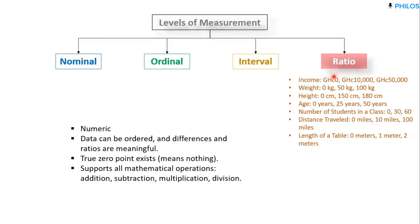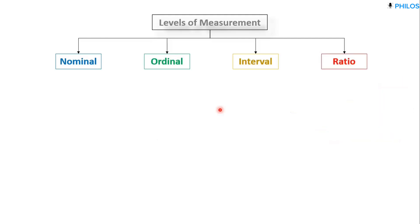For ratio level data you can calculate the mean, and aside from the mean you can also find the median, the mode, percentiles, quartiles, standard deviation, range, coefficient of variation, and more. In our next tutorial we'll look at data collection methods. Please comment below with examples of each level of measurement, and be sure to like the video, share it, and subscribe to the channel for more tutorials. Thank you and see you in the next tutorial.